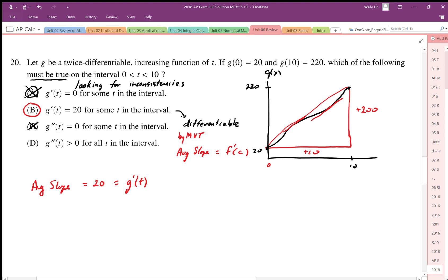G double prime is greater than zero—we could draw that case, so it is possible, but again we can find an example where it contradicts, so it's inconsistent. We're looking for contradictions or inconsistencies; we found them in all three of those, but in B we can use the mean value theorem to verify that B is in fact true.